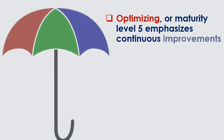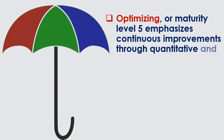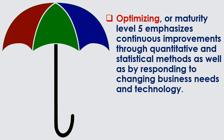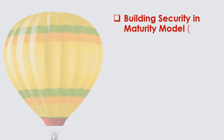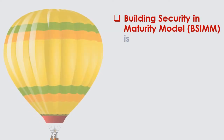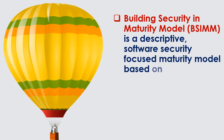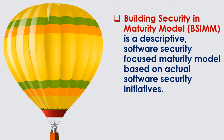Optimizing, or Maturity Level 5, emphasizes continuous improvements through quantitative and statistical methods as well as by responding to changing business needs and technology. Building Security in Maturity Model, or BSIMM, is a descriptive, software security-focused maturity model based on actual software security initiatives.